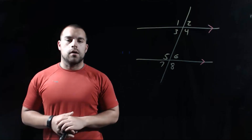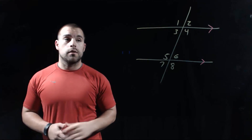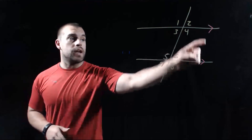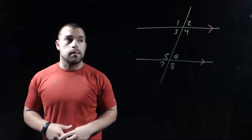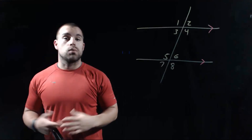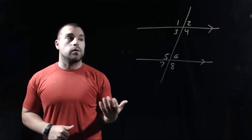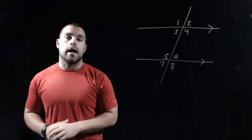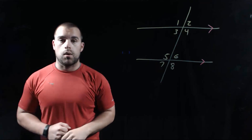So here we've got a pair of parallel lines, and we know they're parallel because they have those red arrows on them, and we've got our transversal running between our two lines, creating those eight different angles that we talked about in 3.1.